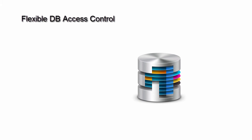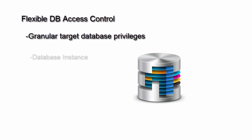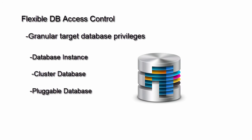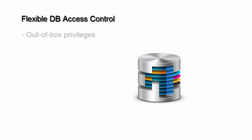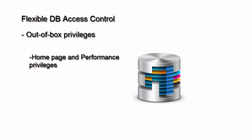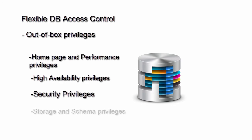Flexible DB access control privileges are very granular database target privileges available for target types database instance, cluster database, and pluggable database. Close to 150 new out-of-box privileges are introduced, which are categorized in these DB management areas: home page and performance privileges, high availability privileges, security privileges, and storage and schema privileges. There are separate view and manage privileges for all areas in database management.